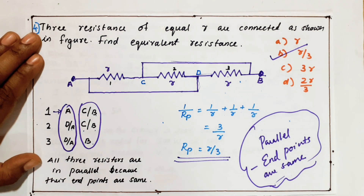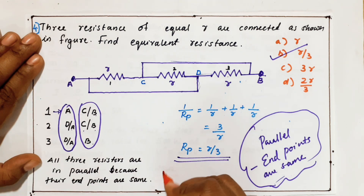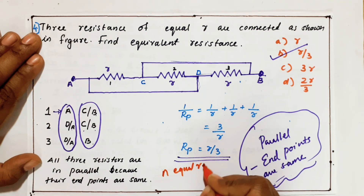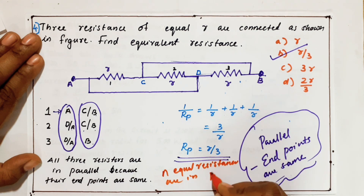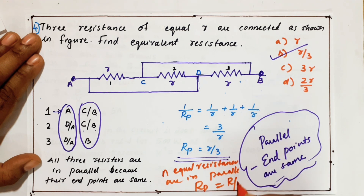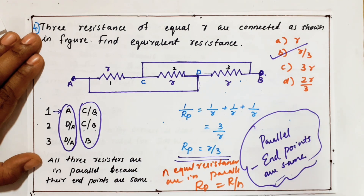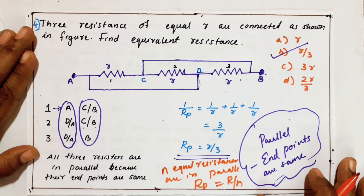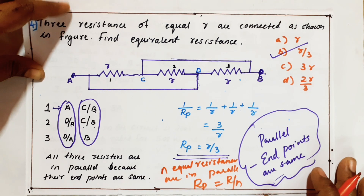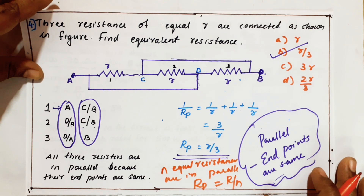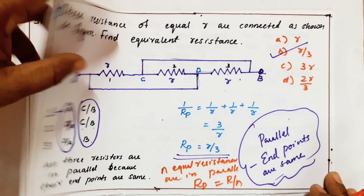Here is another shortcut: if N equal resistances are in parallel, R_P = R/N. Here we have 3 resistors, so the answer is R/3. If 5 are connected, it would be R/5. That is the shortcut equation for solving quickly. Parallel means endpoints should be same.